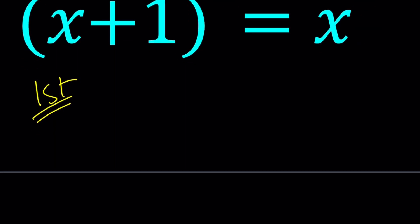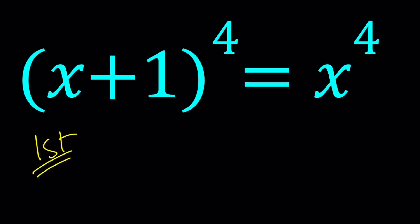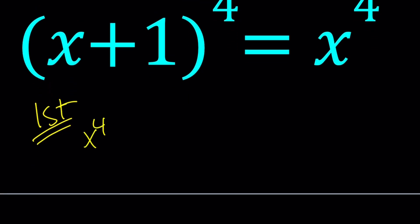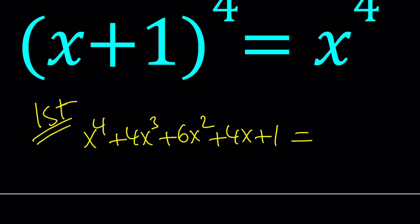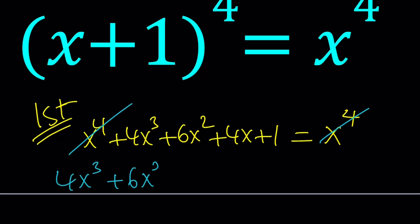First method. I'd like to expand the left hand side. From the binomial theorem, we get x to the 4th plus 4x cubed plus 6x squared plus 4x plus 1. Remember Pascal's triangle with all the coefficients — 4th row, this is what you get. Now even though this may look initially like a quartic equation, it's not. It is a cubic equation because x to the 4th power cancels out, and we end up with 4x cubed plus 6x squared plus 4x plus 1 equals 0.